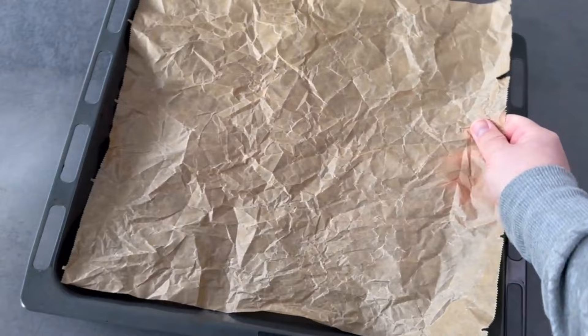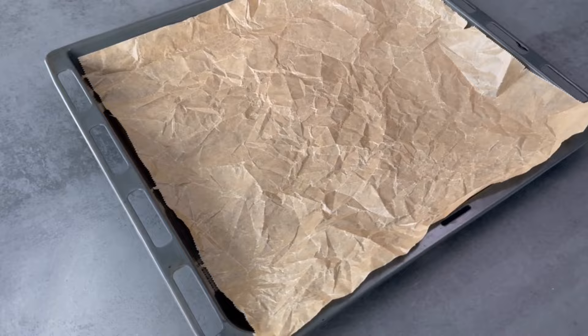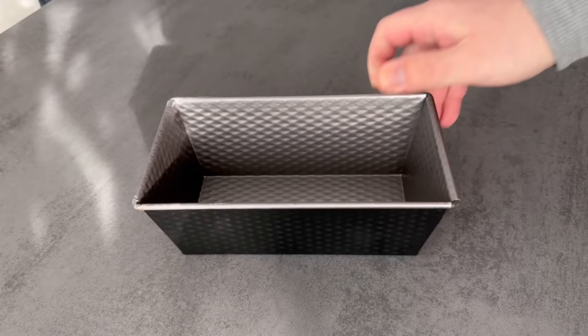Then we come directly to our second ingenious bonus trick. If you have a baking tin like this, it's usually not so easy to place a piece of baking paper in it.